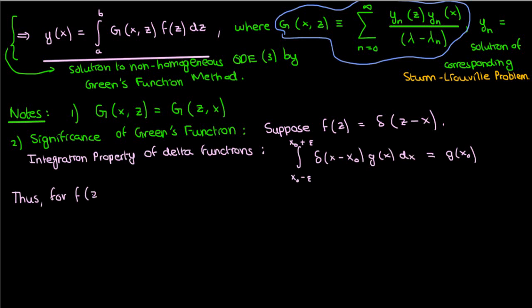So if we end up applying the integration property of delta functions for y of x, we'll find that y is just equal to g of x comma x, or g of x.